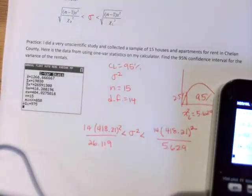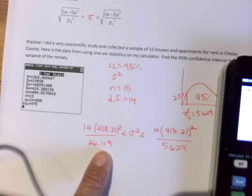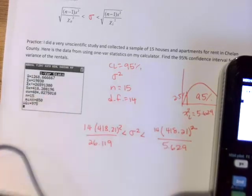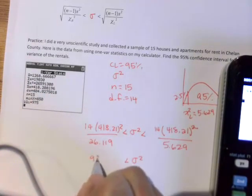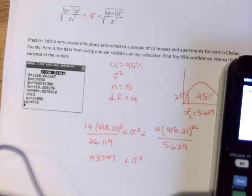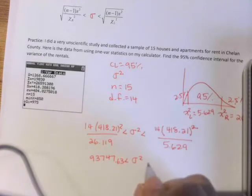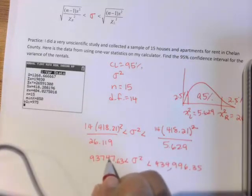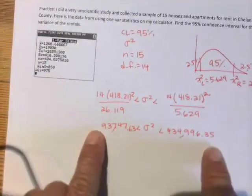And then it's just grabbing your calculator and punching in those values. So, 14 times 418.21 squared, divided by 26.119. So I had to square because what I happened to know in this case was the standard deviation, and I'm talking about the variance. So we can be, that's a big number, 93,747.63, I guess. The variance is between, let me get the right side, I'm just changing that bottom number, 234,996.35.